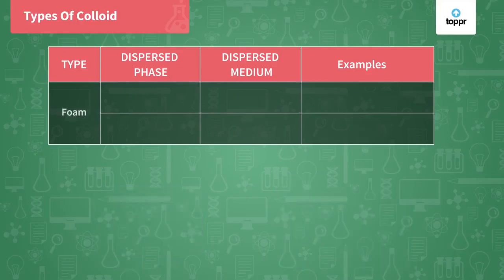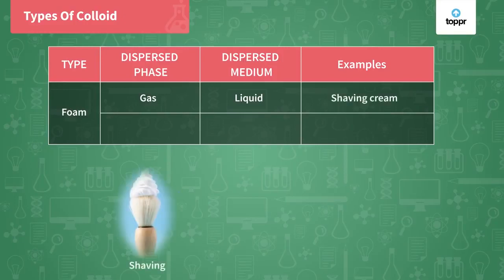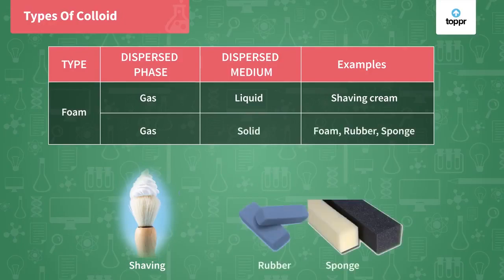The next type of colloid is called a foam, where the dispersed phase is a gas and the dispersion medium is a liquid. The example is shaving cream, where a gas is dispersed in a liquid. Another type of foam is where a gas is dispersed in a solid. Examples are sponge, rubber, or pumice — here the solid has pores due to which air gets filled inside. So a gas is dispersed in a solid, and this type is also called a foam.